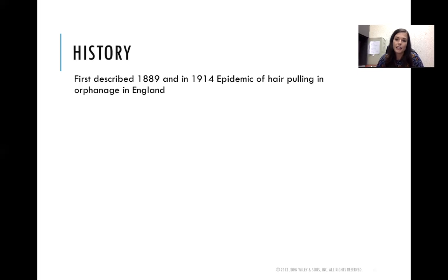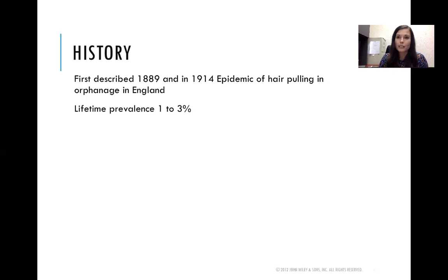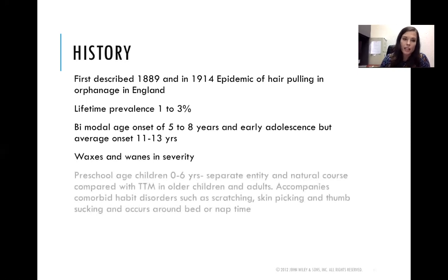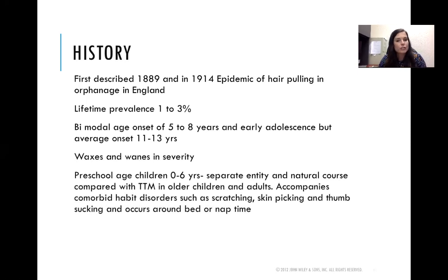Trichotillomania was first described in 1889, with an epidemic of hair pulling noted in an orphanage in England in 1914. It has a lifetime prevalence of 1–3%, with a bimodal age of onset at 5–8 years and early adolescence, but average onset is 11–13 years. It waxes and wanes in severity. In preschool-aged children (0–6 years), it's considered a separate entity compared to trichotillomania in older children and adults, often accompanying comorbid habit disorders such as scratching, skin-picking, and thumb-sucking around bed or nap time.